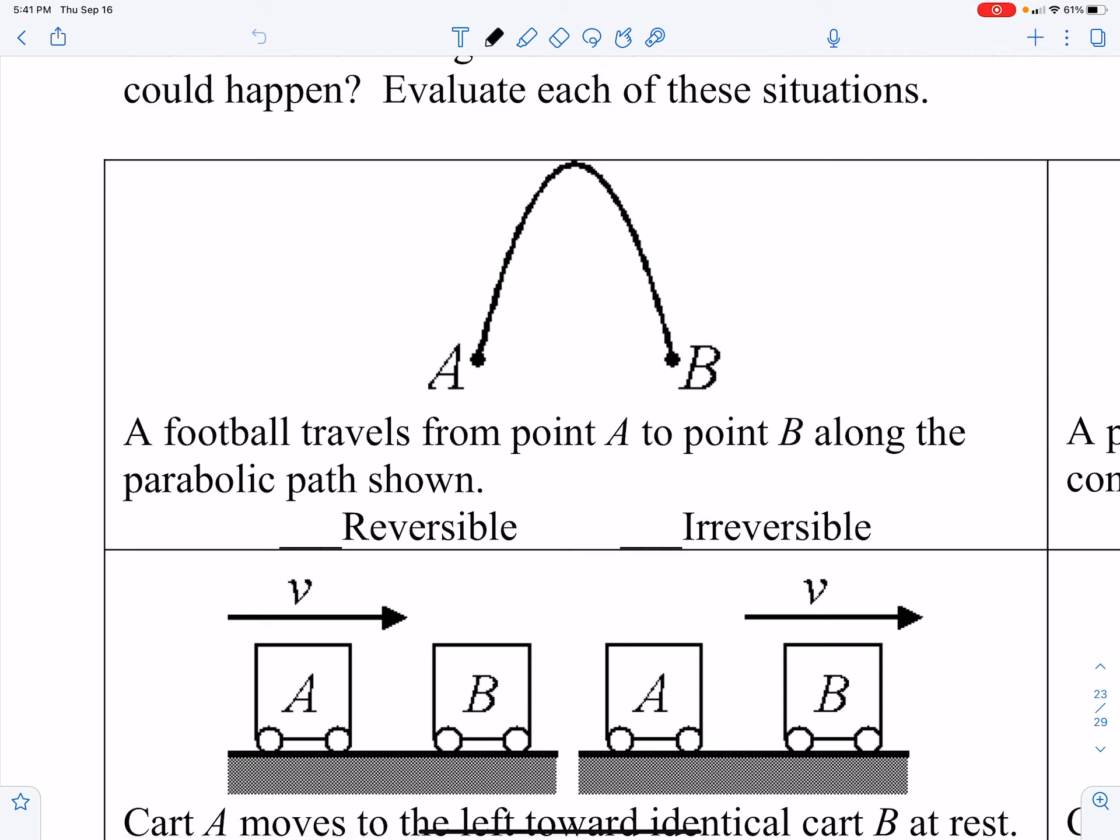A football travels from point A to point B along the parabolic path as shown. This is a reversible process. If you were to rewind it, you would easily get the football to go back from A to B with no resistance.